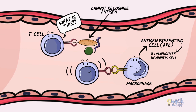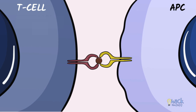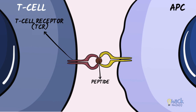Very specifically, T cells require peptides that are derived from these antigens to be presented along with certain cell surface molecules called major histocompatibility complex molecules. A T lymphocyte possesses a T cell receptor made of an alpha-beta polypeptide chain which recognizes peptides displayed by the MHC molecule.